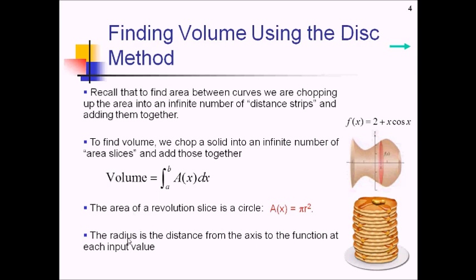The radius itself is the distance from the axis of revolution to whatever your function is at each input value. So in this picture, our radius would be this f of x function itself. But it doesn't have to be the function itself — if this was shifted up so that your axis was the line y equals one, then it's just the function minus one. It's whatever that distance is that's going to be your radius.